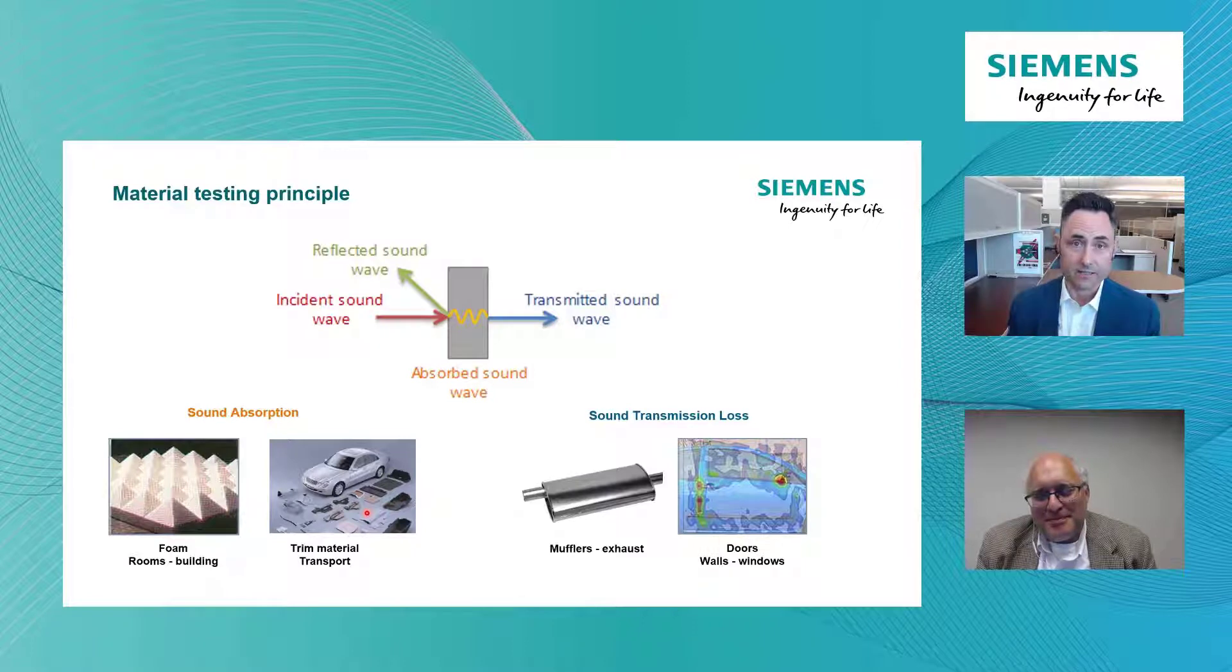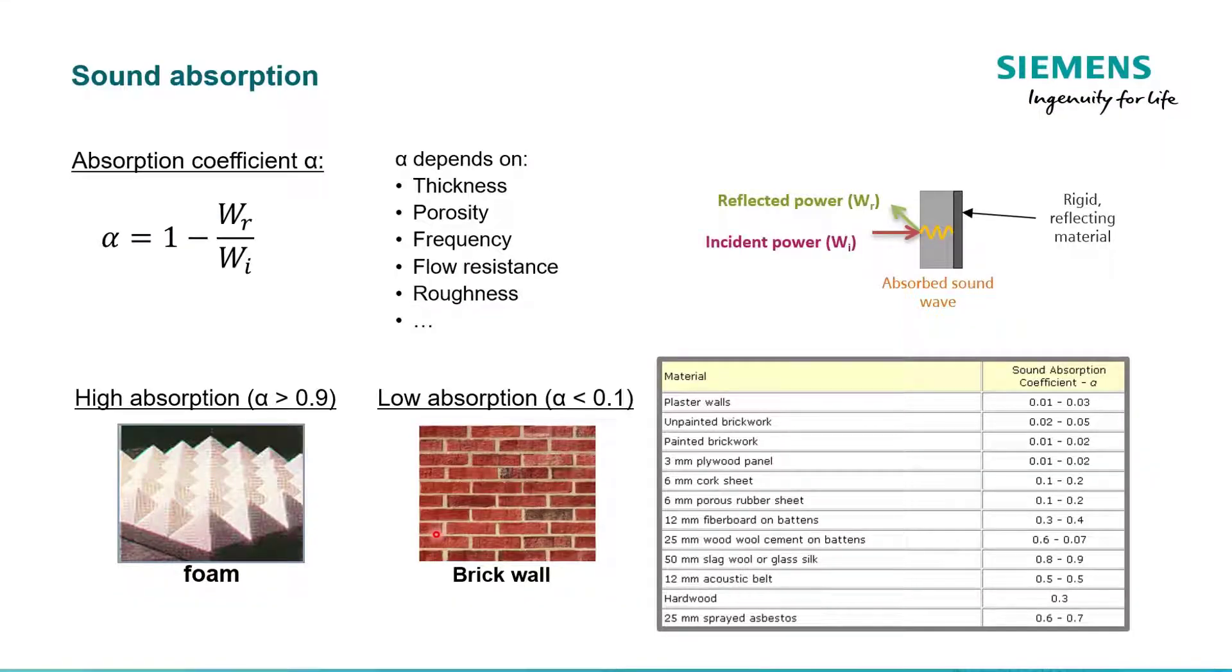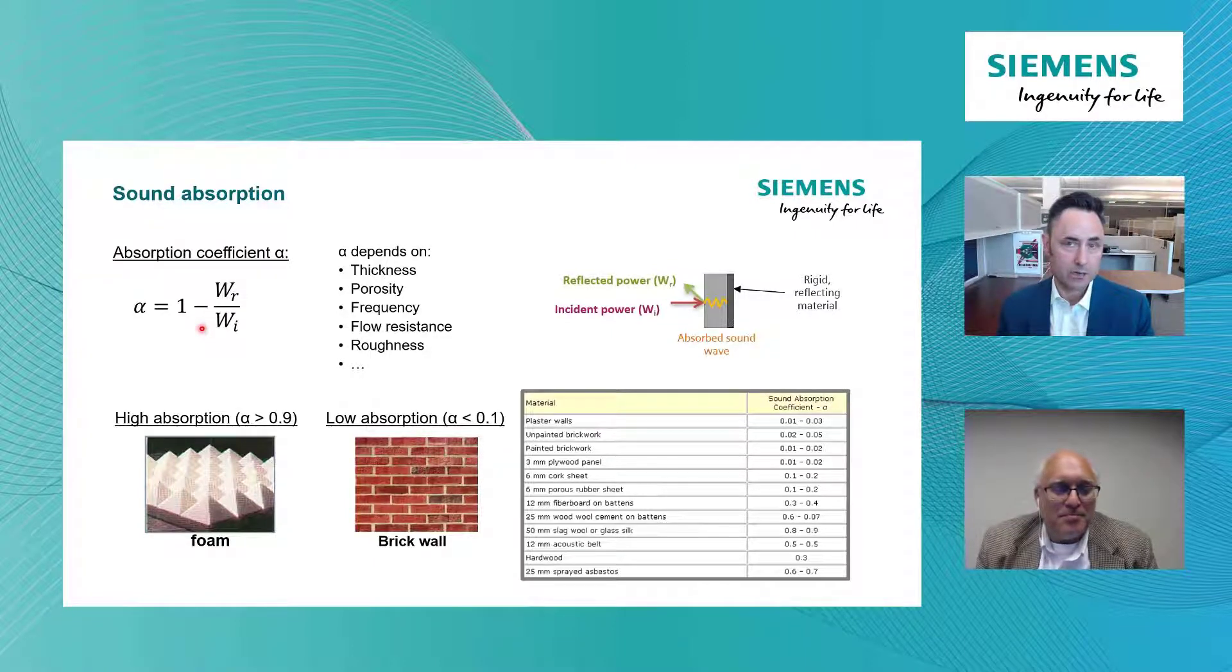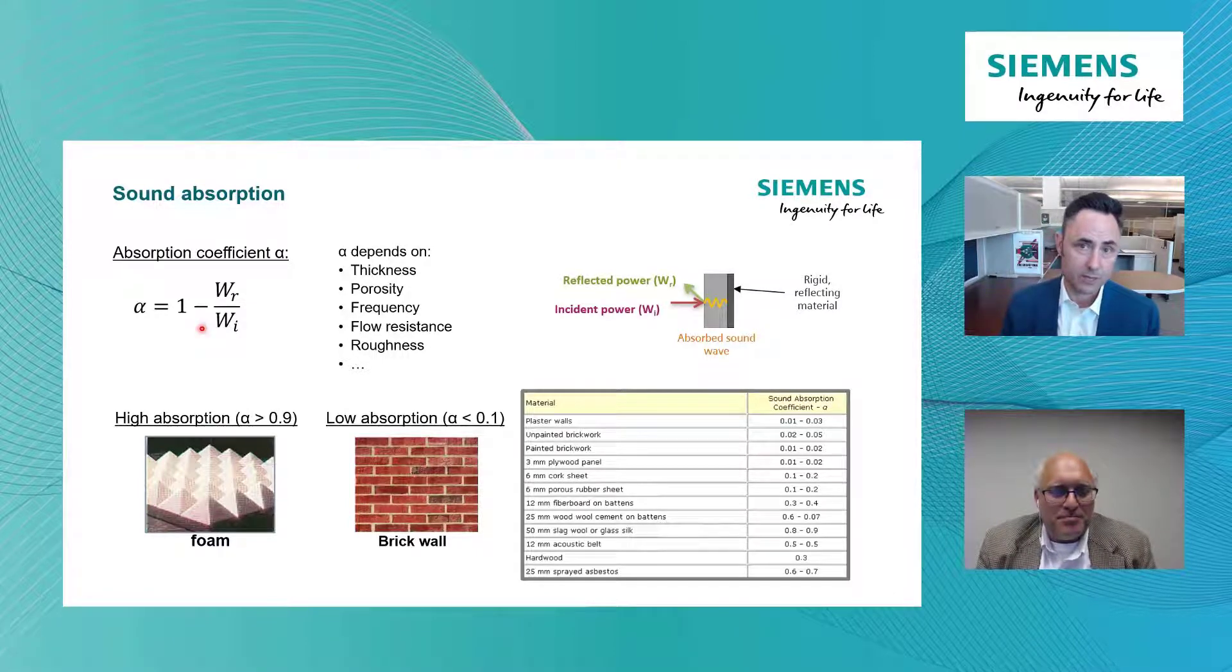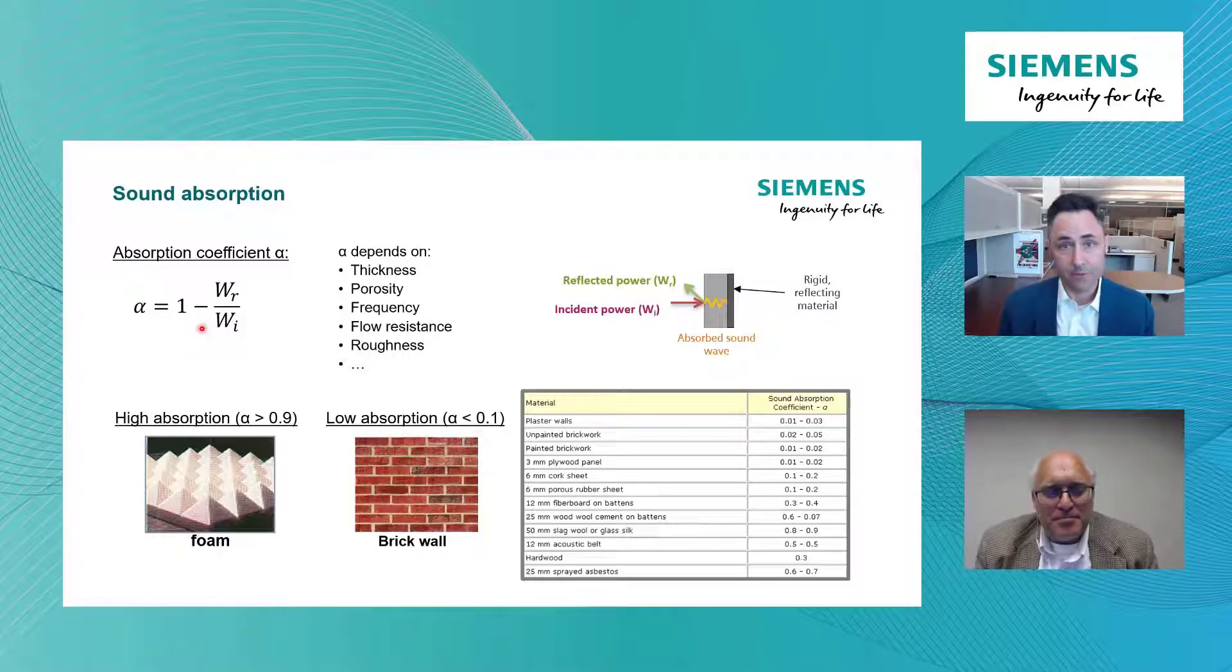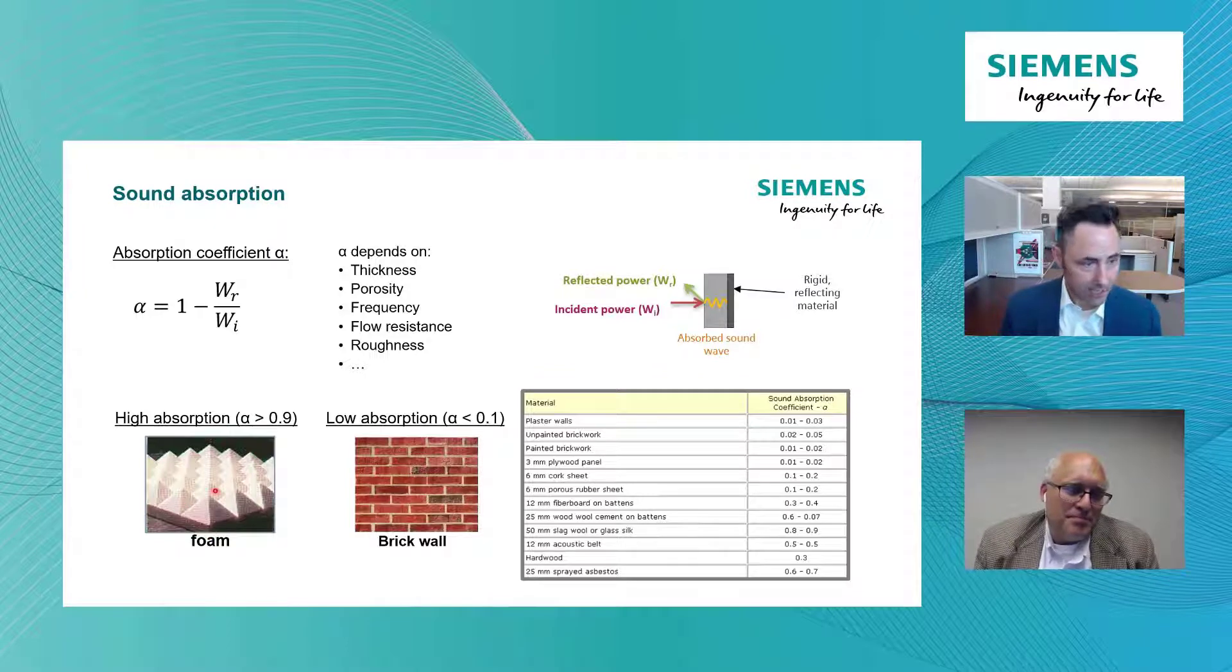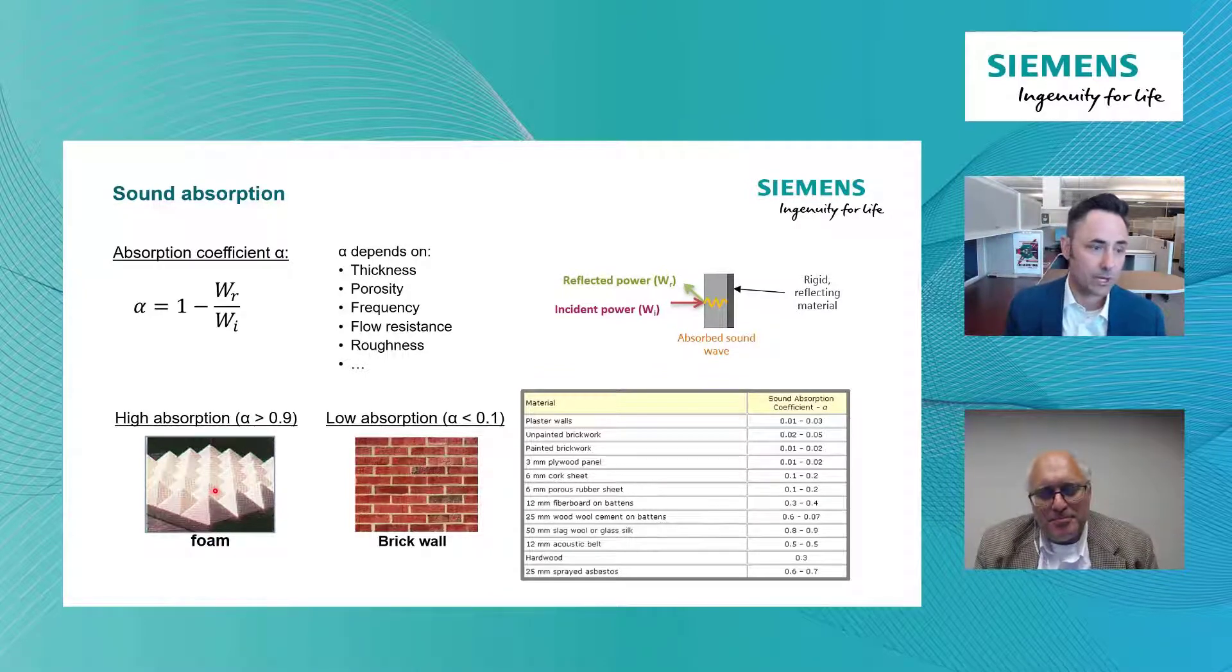If we look first at absorption, we'll talk about the absorption coefficient alpha, and this will give us an idea what percentage of the incident sound energy gets absorbed by the material. The way it's formulated, it will always be a number between 0 and 1. Zero meaning none of the incident sound energy is absorbed. Absorption coefficient at 1 means all of the energy that was incident is absorbed in the material, so it's a perfect absorber. Typically we're talking about 80% or 90% absorption, 0.8 or 0.9 alphas. Low absorption will be 0.1 or 0.2.